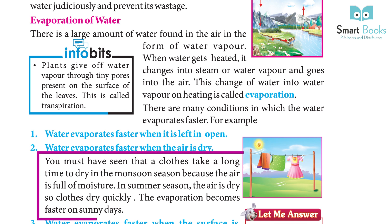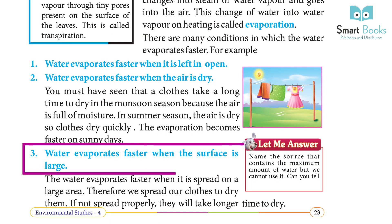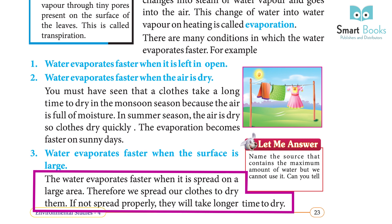Clothes take a long time to dry in the monsoon season because the air is full of moisture. In summer, the air is dry so clothes dry quickly — evaporation becomes faster on sunny days. Water also evaporates faster when the surface area is large. Therefore we spread our clothes to dry them; if not spread properly, they will take longer time to dry.